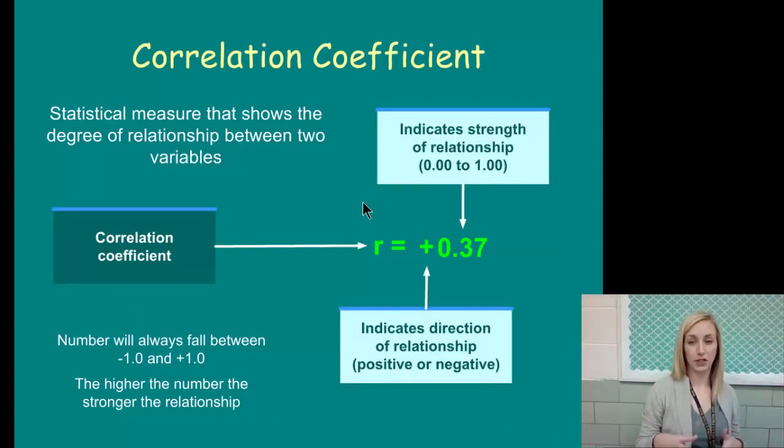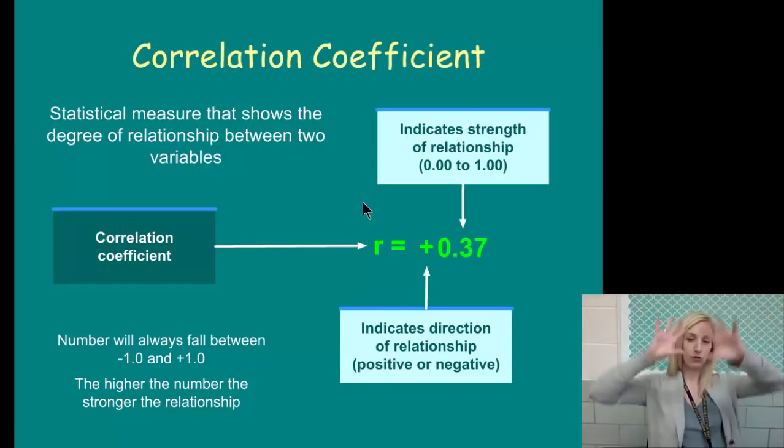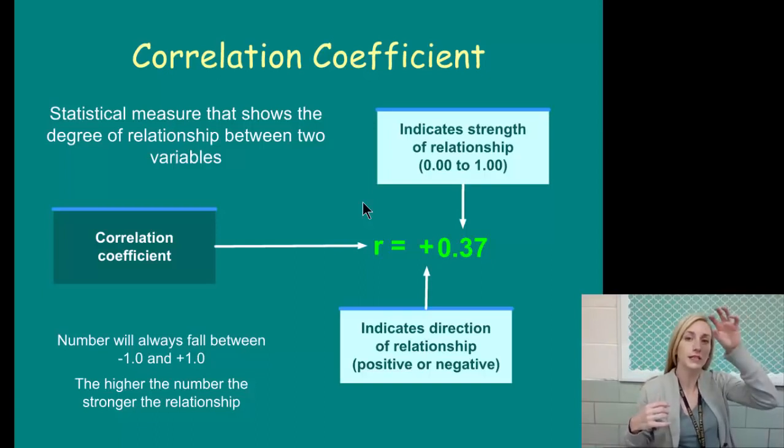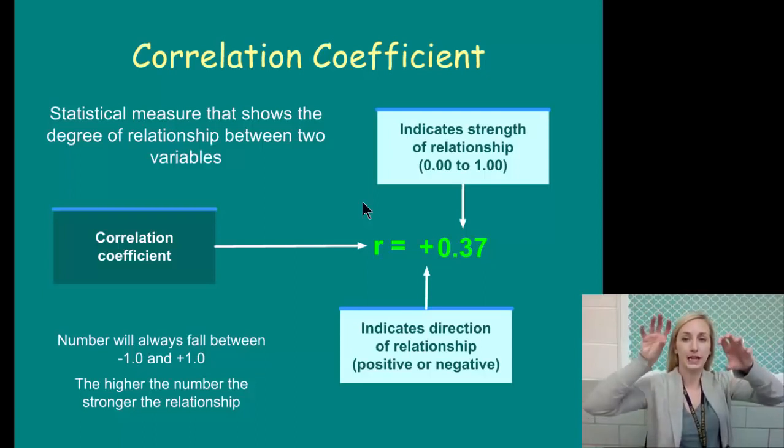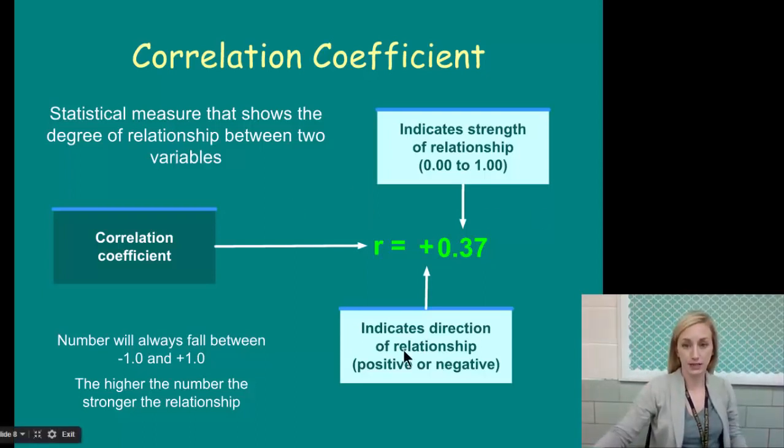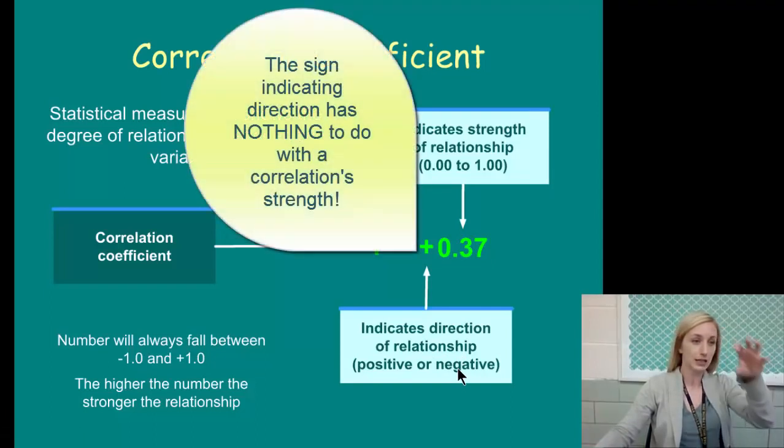Let's talk about the correlation coefficient. This is the number that makes up essentially what the correlation is. It's a statistical measure that shows the degree of the relationship between two variables, a correlation. So it's indicated by R. The number itself, let me back up, there's two separate things here. There's the positive or negative sign, which only tells you the direction. And then there's the number that indicates the strength. The positive or negative sign has nothing to do with the number.